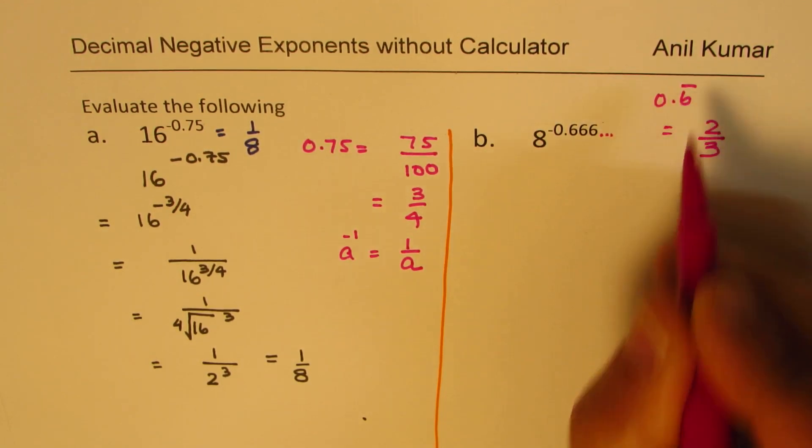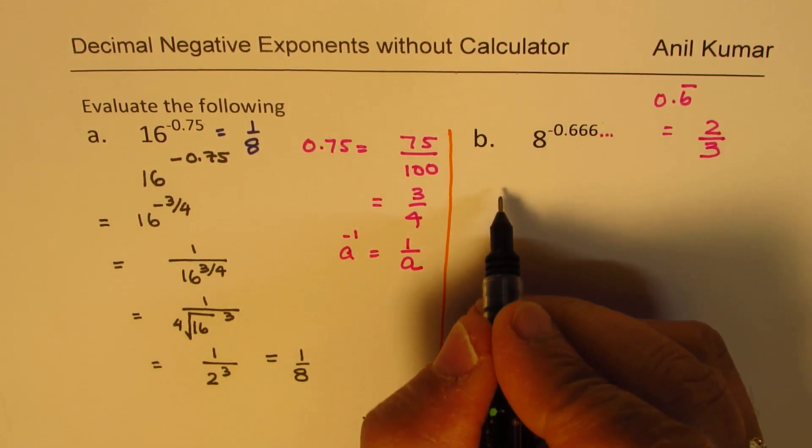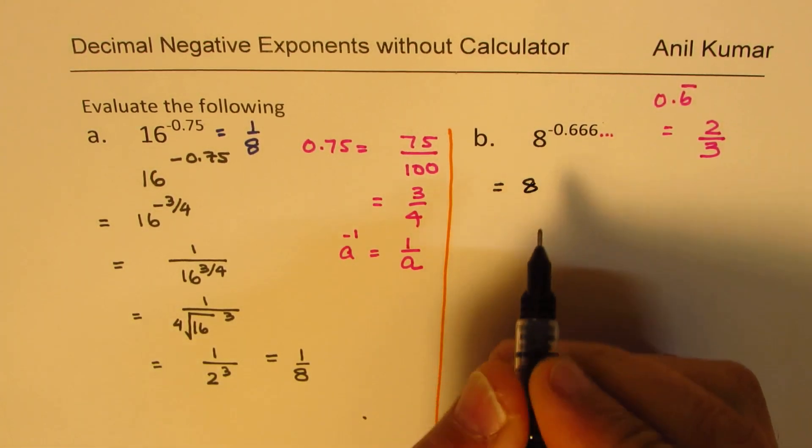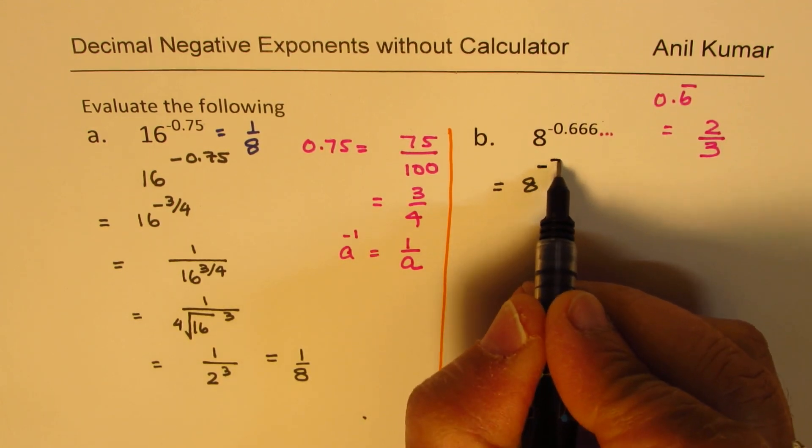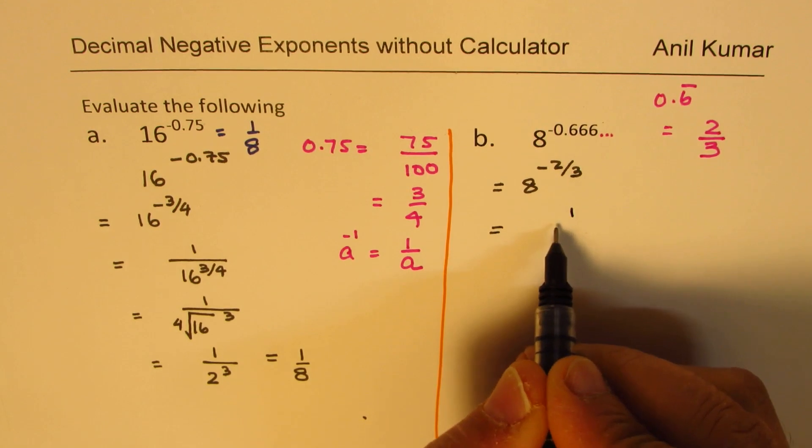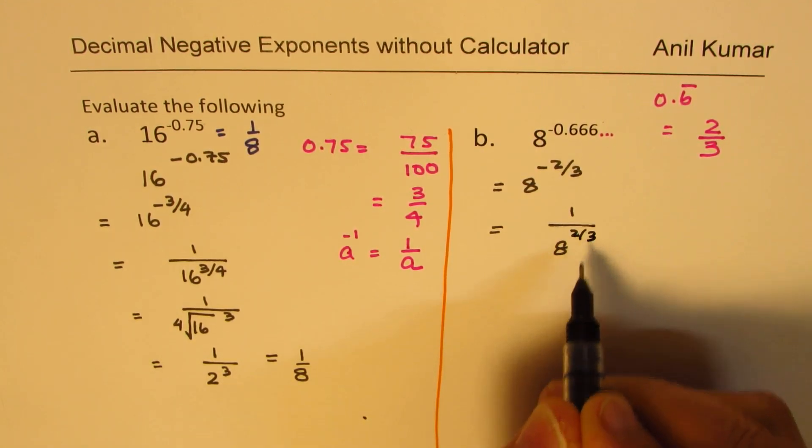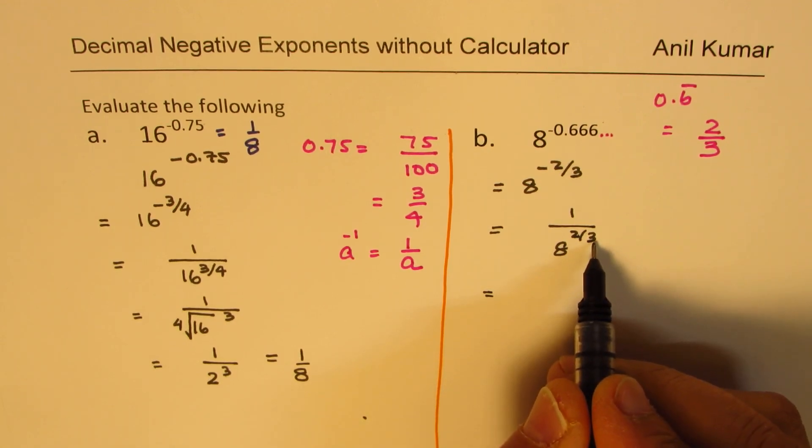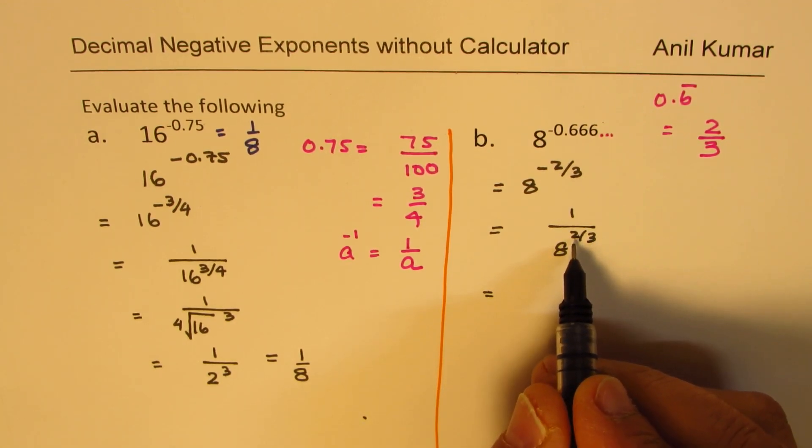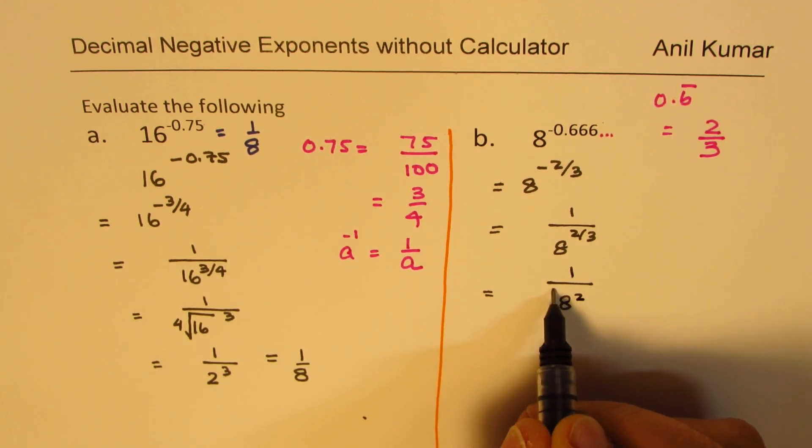If you divide 2 by 3, you get 6 recurring. So basically, we could write this as 8 to the power of minus 2 over 3. Minus as you know is reciprocal. So 1 over 8 to the power of 2 over 3. When it comes in the denominator, it means root and that is the square. So it is basically 1 over 8 square and then cube root of 3.